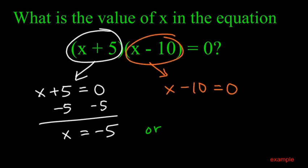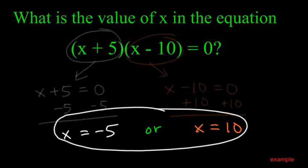Or, there's another situation. Maybe that thing is zero. x minus ten equals zero. Think about it in your head. Add ten to both sides. x could equal ten. So we would just say x equals negative five or x equals ten.